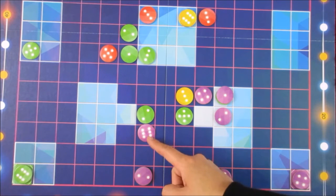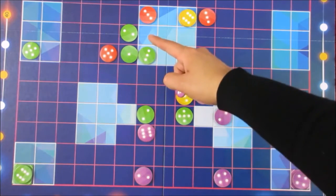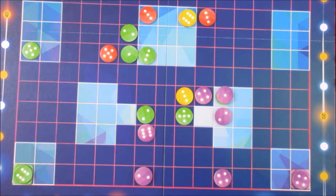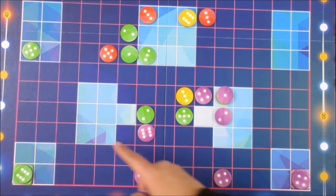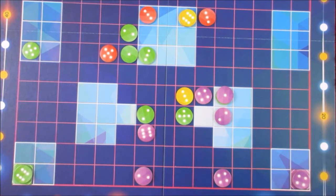For example, this six right here cannot move six in this direction because this token is blocking it. Therefore, it can only move to the left or to the right, and it can't go beyond the board.